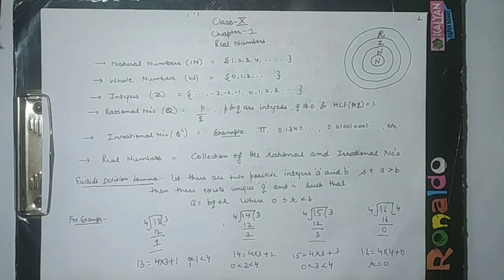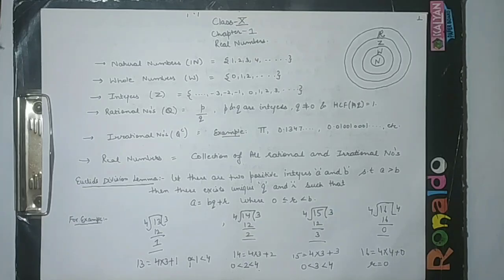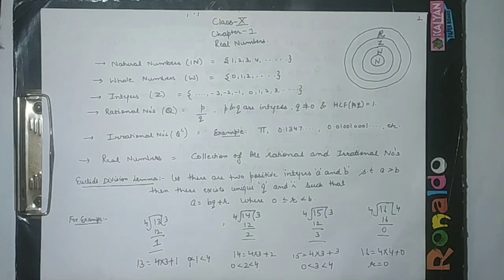Next are irrational numbers. All those numbers which are not included in rationals, i.e. they have non-terminating non-repeating decimal expansion, are included in the irrational numbers. Next are real numbers. So basically the real numbers is the collection of all the rationals and irrational numbers. So all these numbers — natural, whole, integer, rational, and irrational — they are all included in the real numbers.